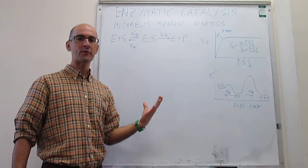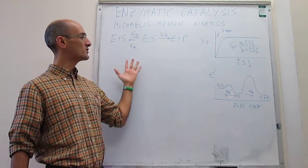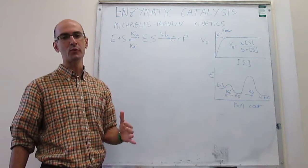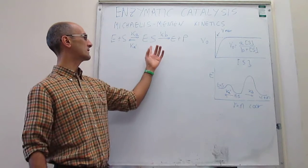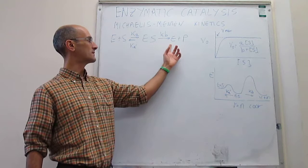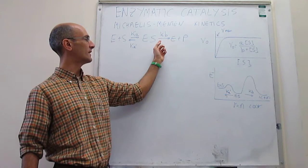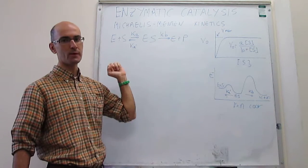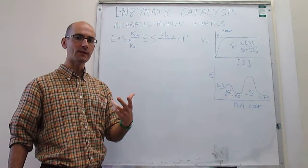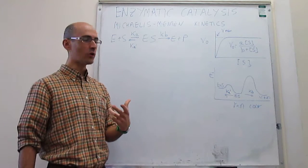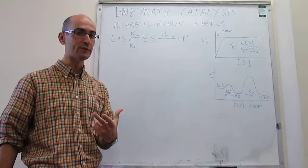In a prior video, we have seen how we can get there by assuming a situation of pre-equilibrium, in which this step is very fast — where k_A is very high compared to k_A'. That pre-equilibrium mechanism works well for some enzymes but not for all.